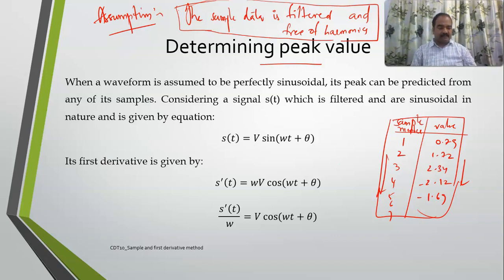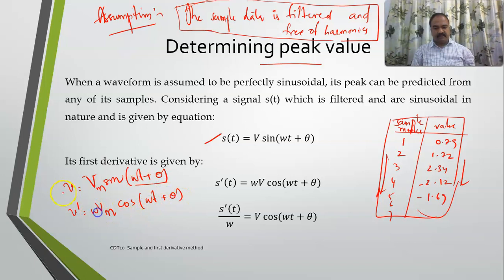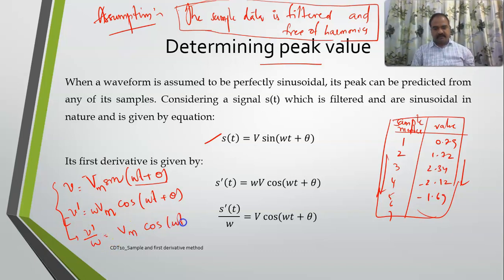Let us see how to determine the peak value when you have a set of samples. Let us suppose any signal of sinusoidal form: v = Vm sin(ωt + θ). If I take the first derivative, v' = Vm·ω·cos(ωt + θ). So v'/ω = Vm cos(ωt + θ).